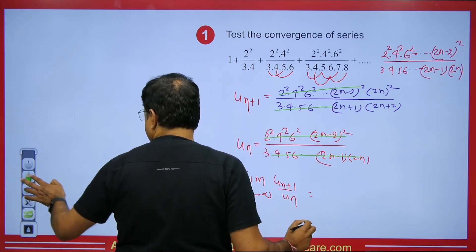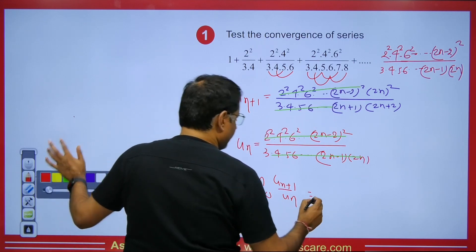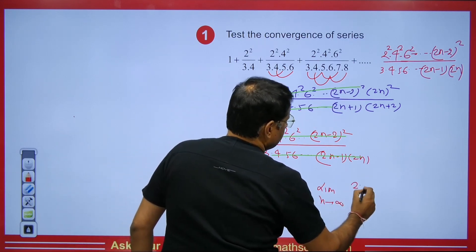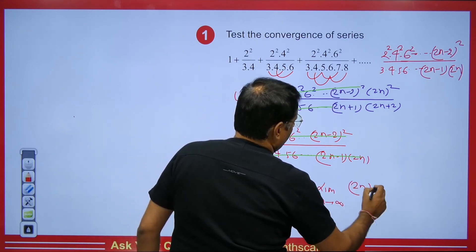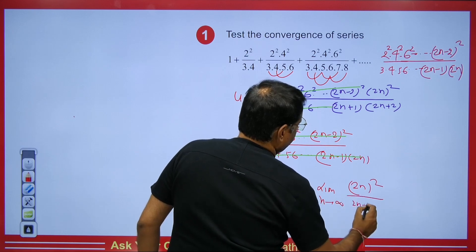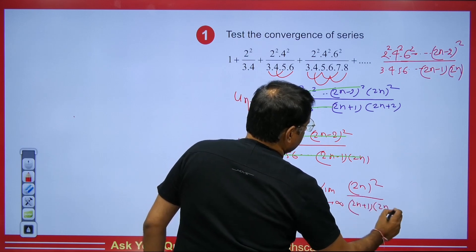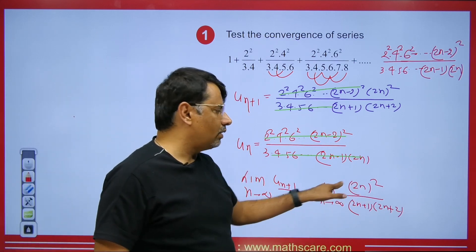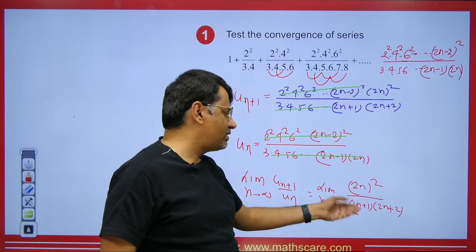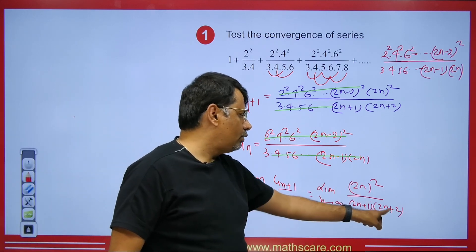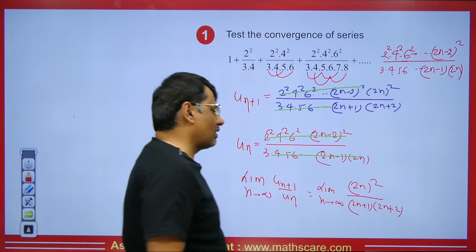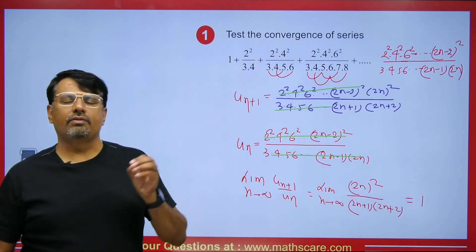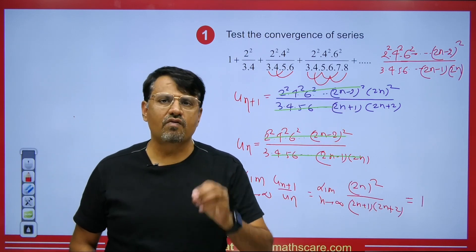Finding the limit: 4n² on top, and 4n² from (2n+1)(2n+2) on the bottom. They cancel and the limit equals 1, so the D'Alembert Ratio Test fails. We now apply Raabe's Test.